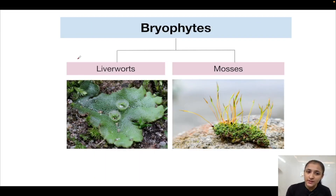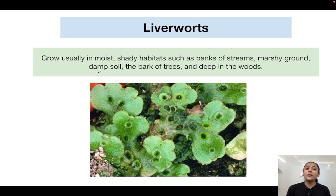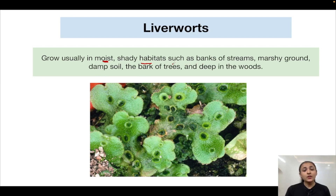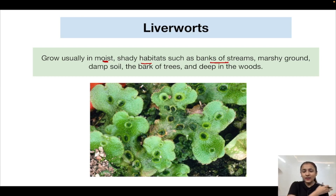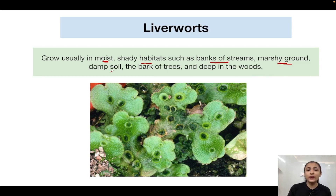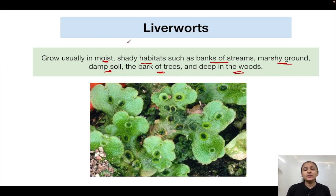Bryophytes are divided into liverworts and mosses. Liverworts usually grow in moist, shady habitats such as banks of streams, marshy grounds, damp soil, bark of trees, and deep in the woods. All bryophytes grow in moist, shady habitats.